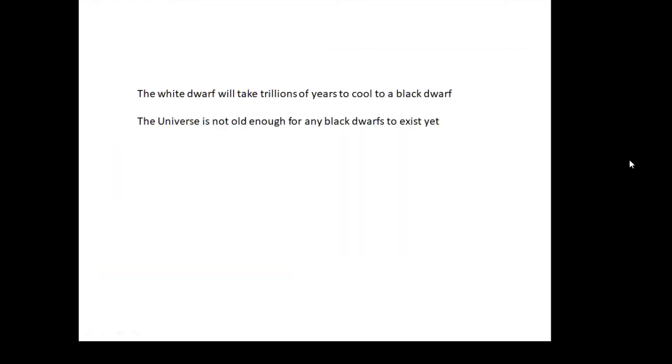So we are left with this white dwarf. It will take trillions of years to cool down and eventually it will become a dark cold thing called a black dwarf. And there aren't any black dwarfs because the universe isn't old enough. The universe is only about 13.8 billion years old, so it's not old enough for any black dwarfs to exist yet.